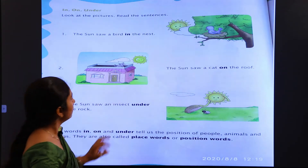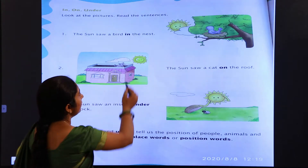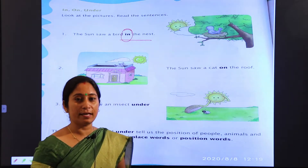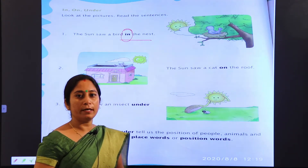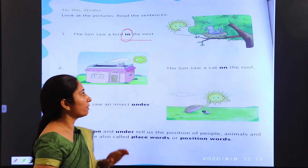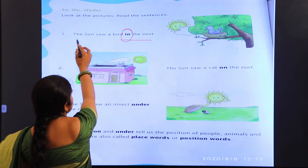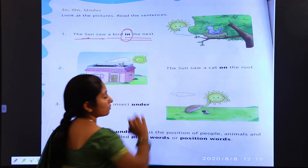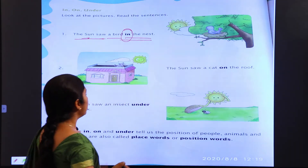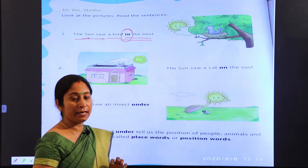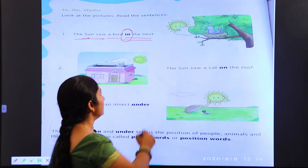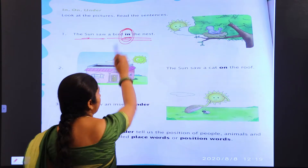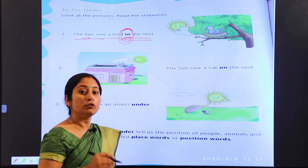You see here a sun. The sun saw a bird in the nest — 'in' means kisi bhi chiz ke andar, 'on' means upar, 'under' means kisi ke niche. So our first sentence: 'The sun saw a bird in the nest.' Saw means dekhna, sun means surya, nest means ghosla. The bird is inside the nest — agar andar koi cheez aati hai, toh 'in' aata hai. Hum kisi bhi chiz ke andar entry karte hain toh 'in' aata hai.